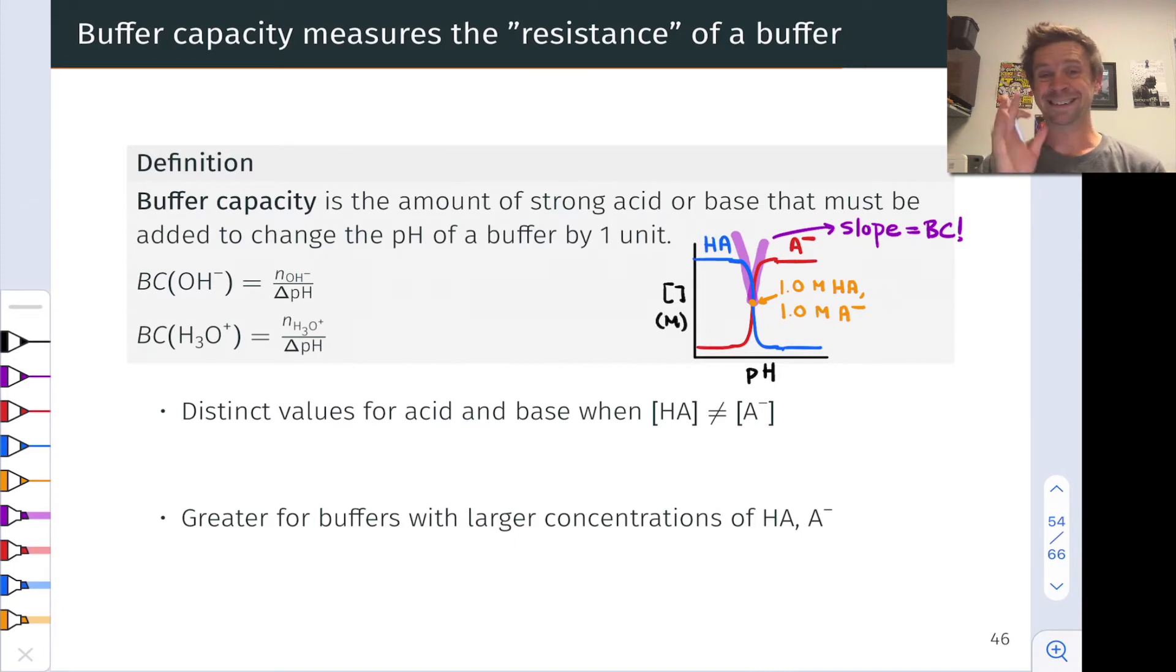The ideal buffer is right at the center of this curve. As we move to one side or the other, adding more conjugate base or adding more acid, the buffer capacity of either acid or base is going to go down. And overall, the buffer just gets less effective at resisting acid and base.